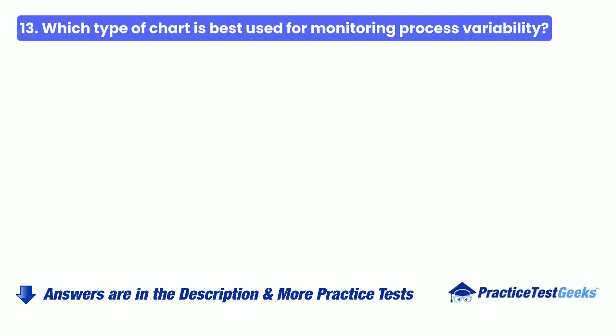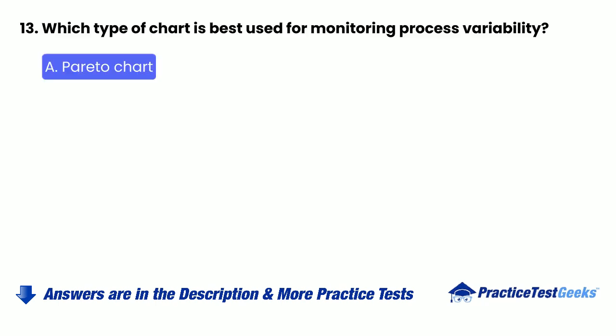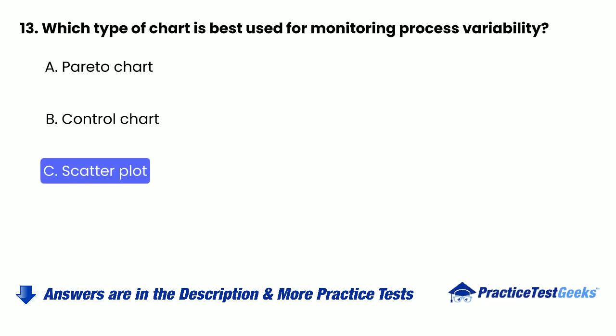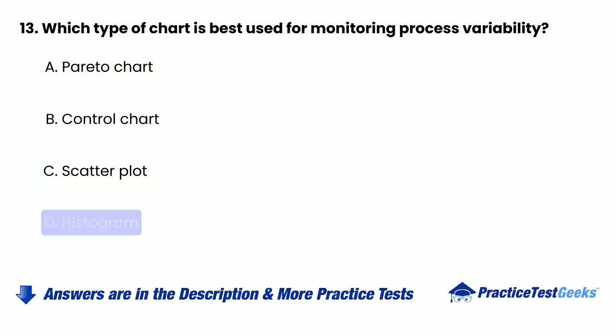13. Which type of chart is best used for monitoring process variability? a. Pareto chart. b. Control chart. c. Scatter plot. d. Histogram.